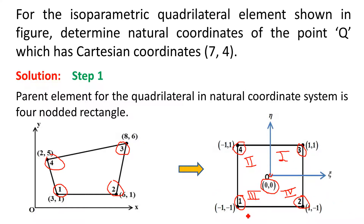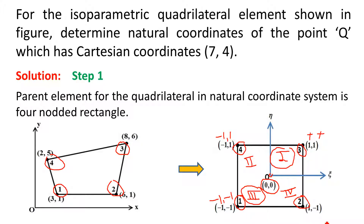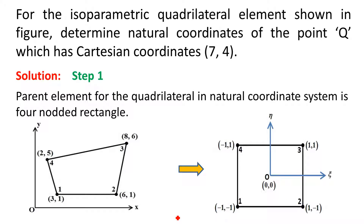The coordinates of nodes 1, 2, 3, 4 in the natural coordinate system: since the maximum coordinate is +1 and minimum is −1, node 3 is in the first quadrant so its coordinates are (+1, +1). Node 1 is in the third quadrant, so coordinates are (−1, −1). Node 4 is in the second quadrant, so ξ=−1, η=+1, giving (−1, +1). Node 2 is in the fourth quadrant, so ξ=+1, η=−1, giving (+1, −1).